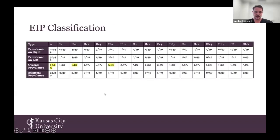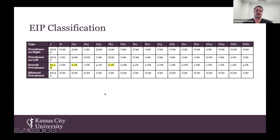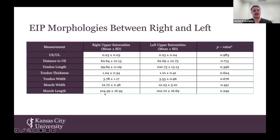I'm going to dive into some of those results. The first piece of data I want to discuss is the overall prevalence of the individual types. This chart contains their overall prevalences, the prevalence on the right, left, and bilateral. I've highlighted the three most prevalent in this study. We also looked at the different morphologies between the left and right, but there were no significant values.